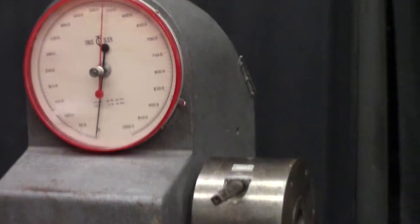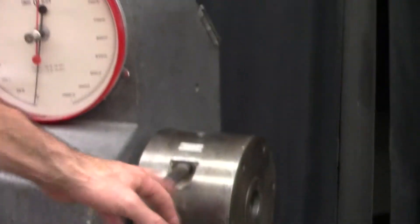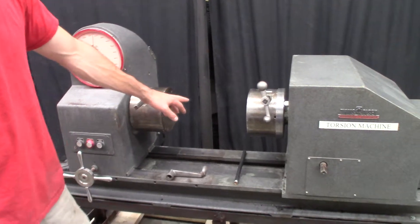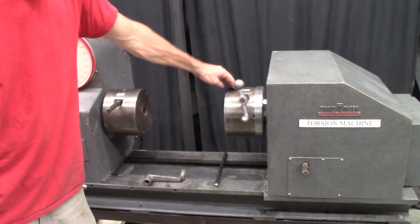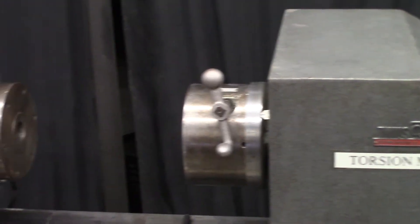The torque is applied to your sample with this chuck here with a motor inside this cabinet, and then you can also manually operate it with this lever here.